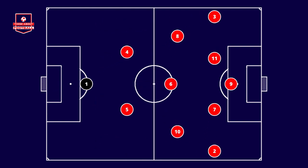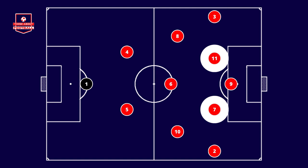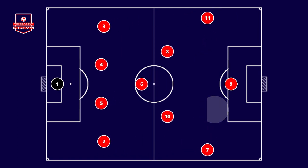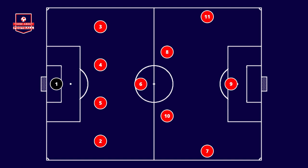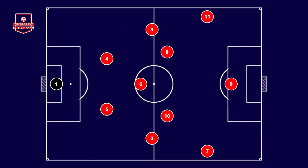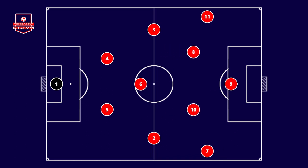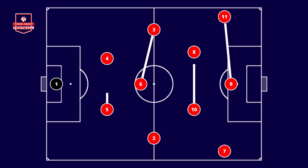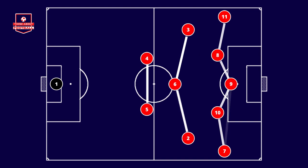For instance, the 2-3-5 formation can be seen when a team grants its fullbacks freedom to advance to the opposing goal line, often overlapping with the wingers who move towards the central corridor. When a team has fullbacks who don't venture as far forward — like inverted fullbacks — they move towards the central corridor, allowing the midfielders to advance and keeping the wingers wide. In this scenario, we can observe a 2-3-2-3 formation where, during advanced phases, the two front lines can merge into a line with five players.